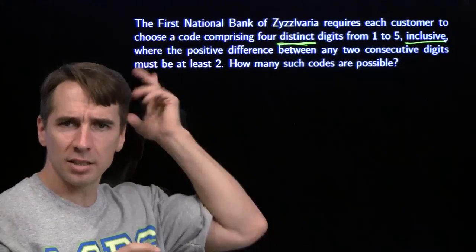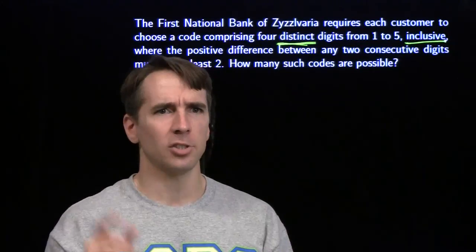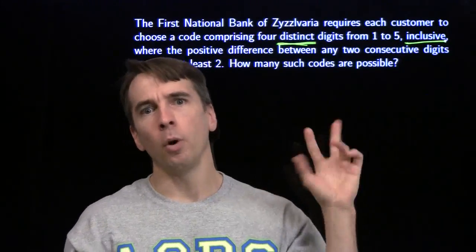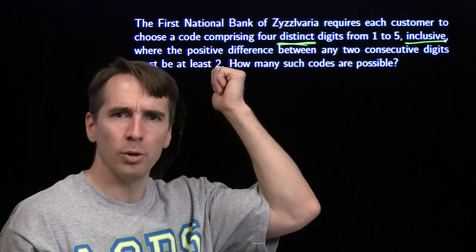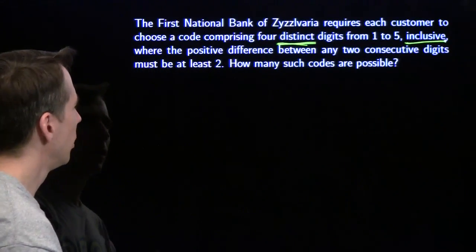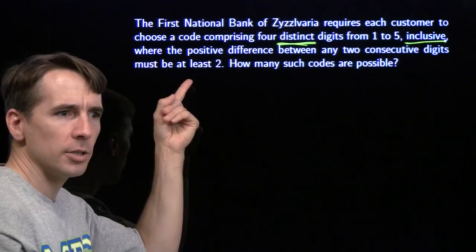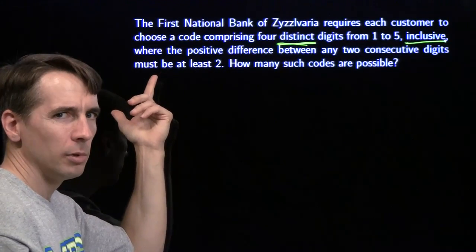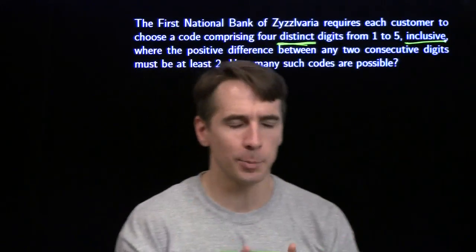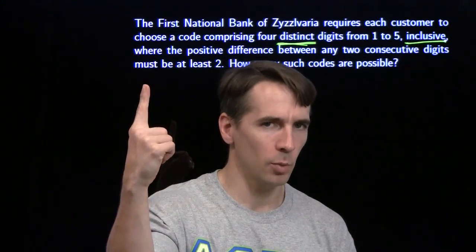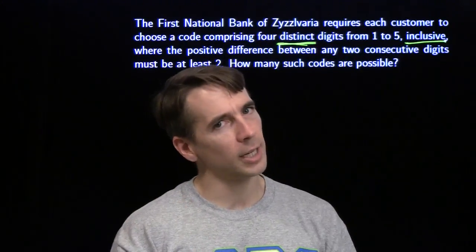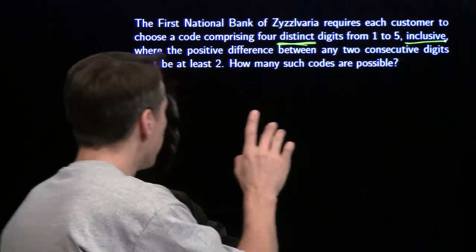The difference between any two consecutive digits has to be at least two. That means you can't start off four, three; you can't have one, two in the middle; you can't have five, four at the end. This is going to knock out a whole lot of possible codes — there aren't going to be many left. I don't see a particularly clever way to count these, so I'm going to try to list them. This is where 'once and only once' gets really important: you need a strategy to hit everything — that's the 'once' part — and make sure you don't list anything twice — that's the 'only once' part.